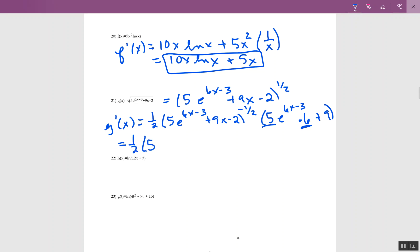We could make this just one little bit slightly better. So here's 5, or sorry, there's 1 half, 5e to the 6x minus 3 plus 9x minus 2. Here's to the negative 1 half. I'm just going to multiply 5 times 6 and call it 30e to the 6x minus 3 plus 9.